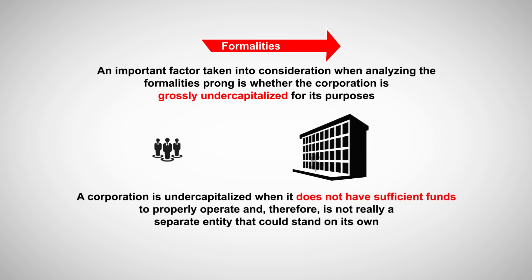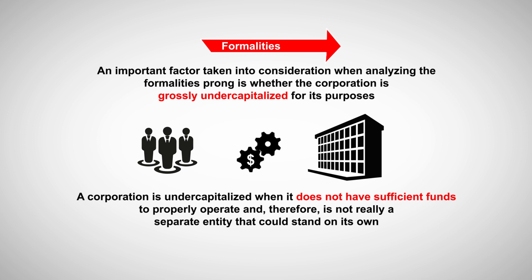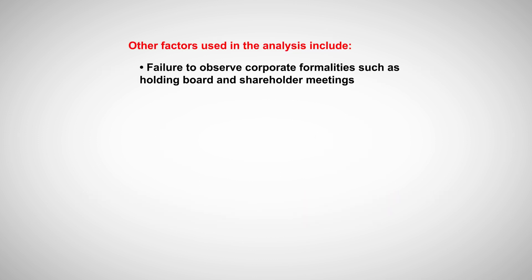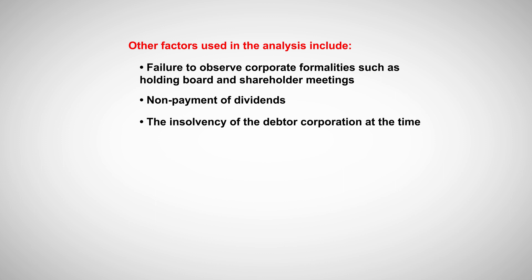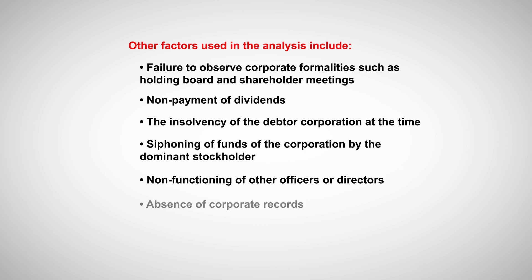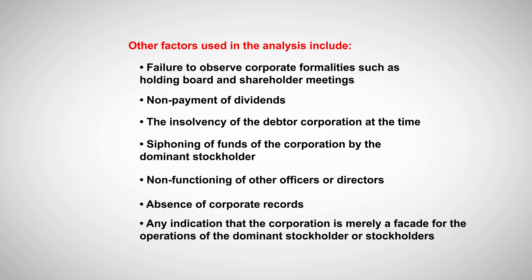An important factor taken into consideration when analyzing the formalities prong is whether the corporation is grossly undercapitalized for its purposes. A corporation is undercapitalized when it does not have sufficient funds to properly operate and therefore is not really a separate entity that could stand on its own. Other factors include failure to observe corporate formalities such as holding board and shareholder meetings, non-payment of dividends, the insolvency of the debtor corporation at the time, siphoning of funds by the dominant stockholder, non-functioning of other officers or directors, absence of corporate records, and any indication that the corporation is merely a facade for the operations of the dominant stockholder or stockholders.